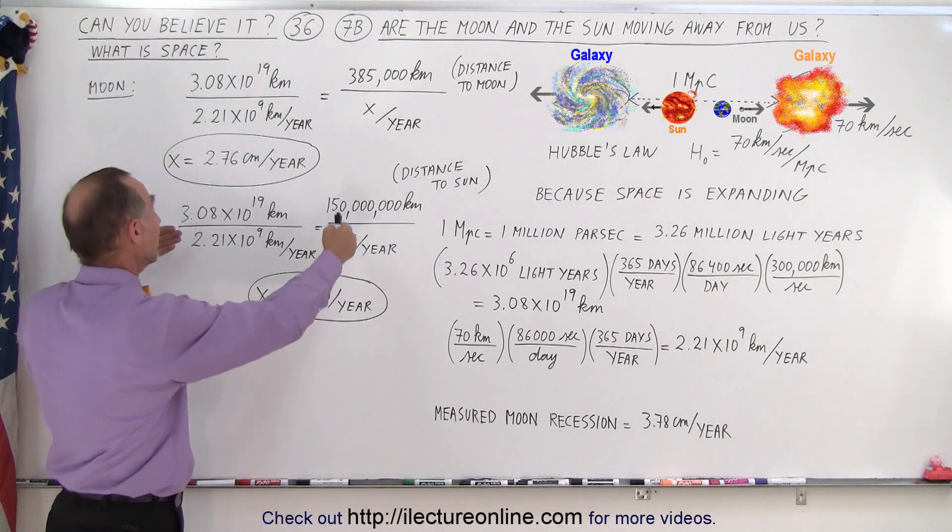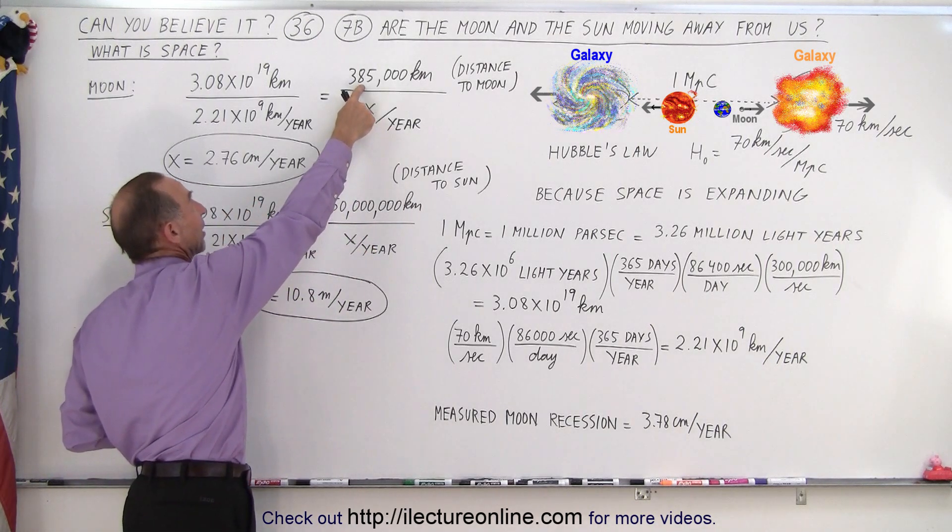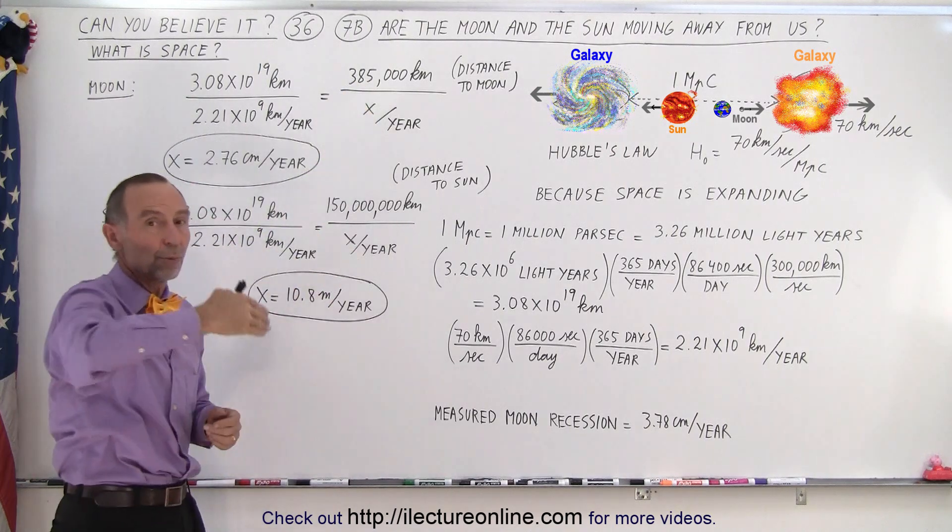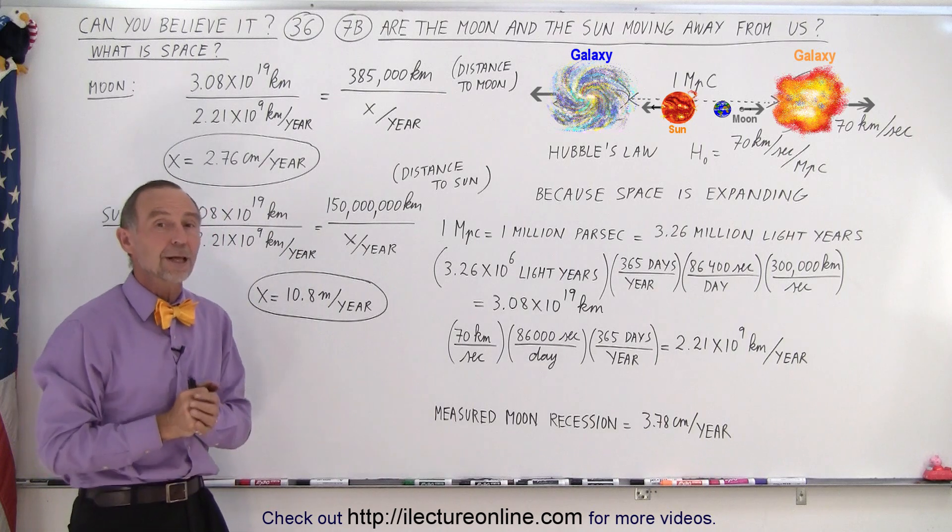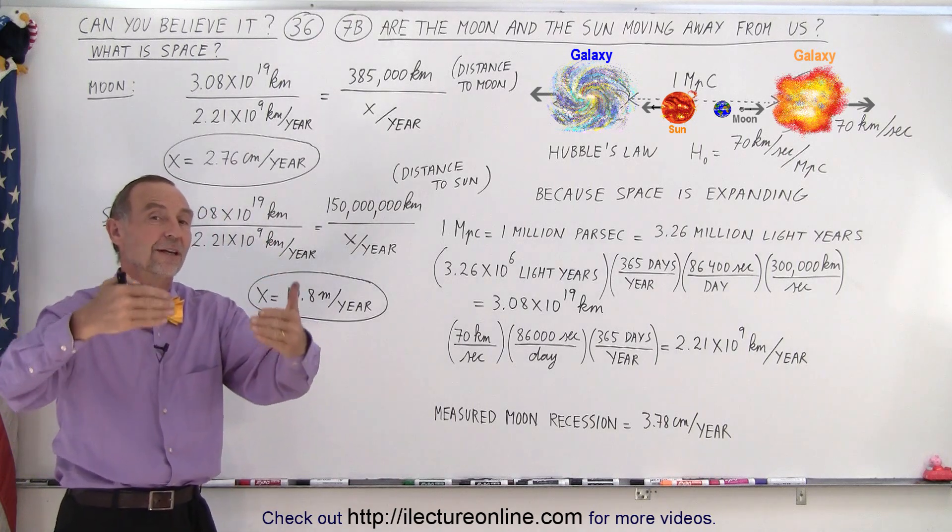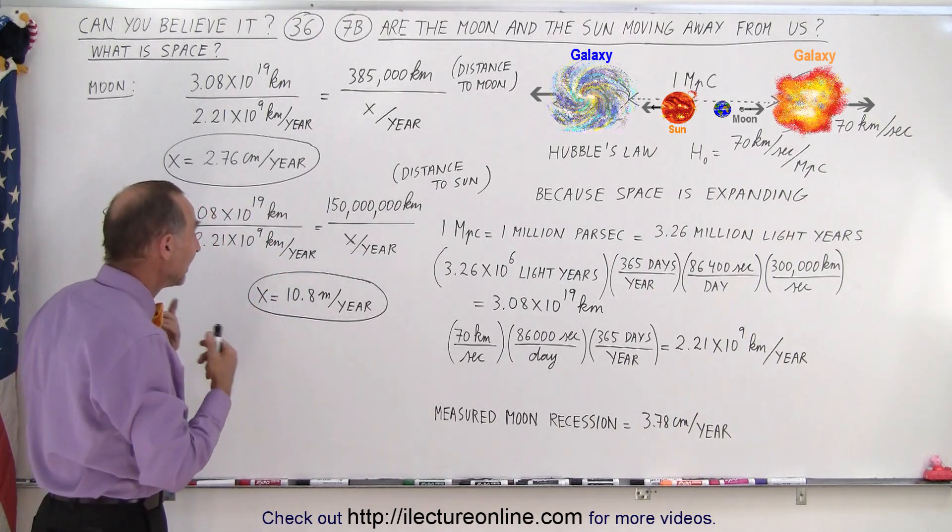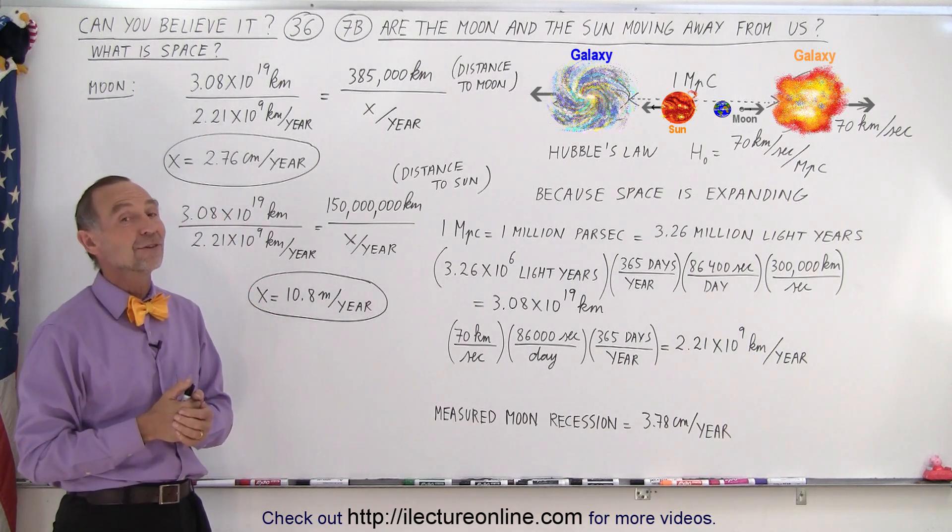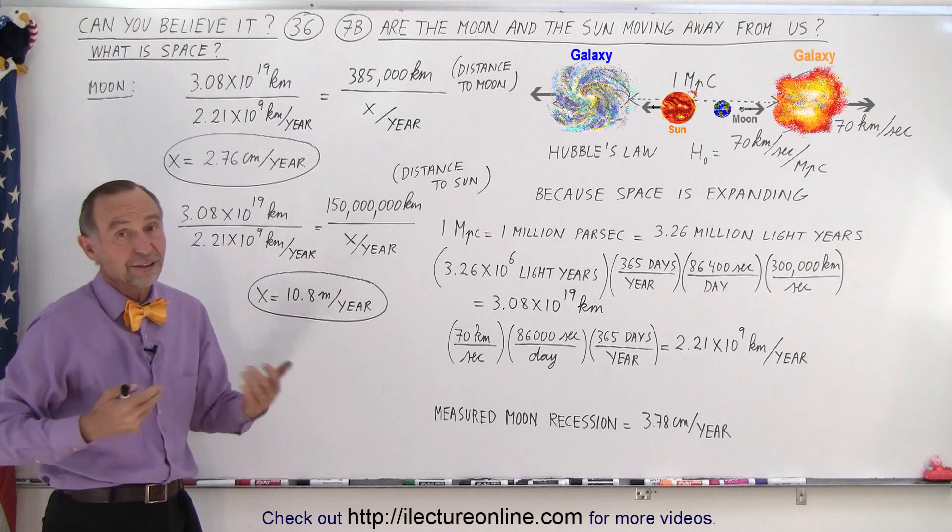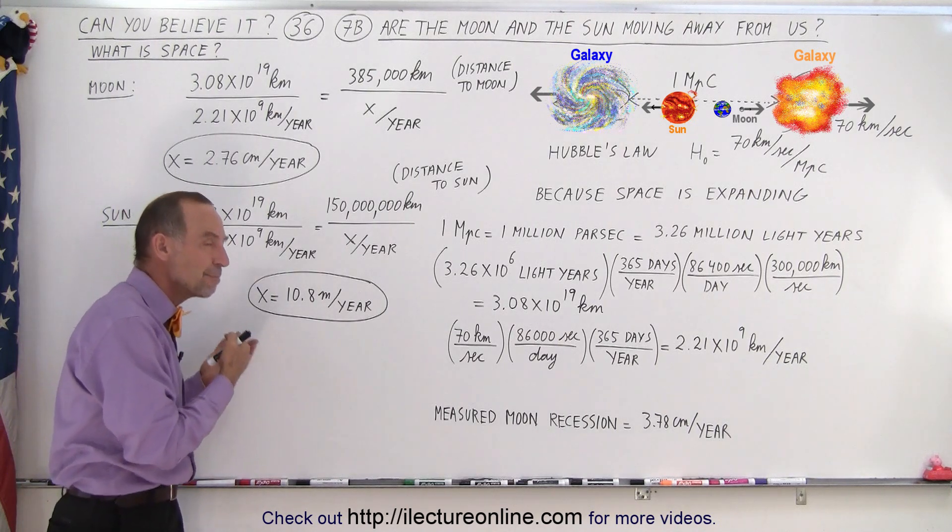Well if you do the same calculation here, but now instead of 385,000 kilometers as the distance between the earth and the moon, we pick 150 million kilometers as the distance between the earth and the sun. And then based upon Hubble law, the sun should be moving away from us at more than 10 meters per year, which is actually significant.